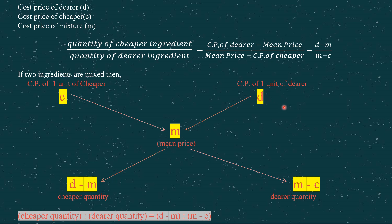The formula states: quantity of the cheaper ingredient upon quantity of the dearer ingredient equals D minus M upon M minus C. In ratio form: cheaper quantity to dearer quantity equals D minus M ratio M minus C. Here D is the cost price of the dearer ingredient, C is the cost price of the cheaper ingredient, and M is the mean price.